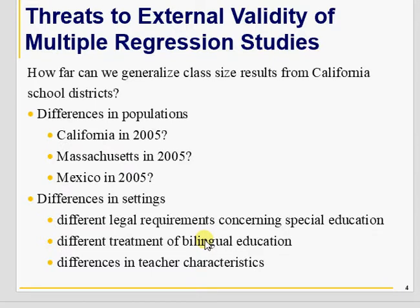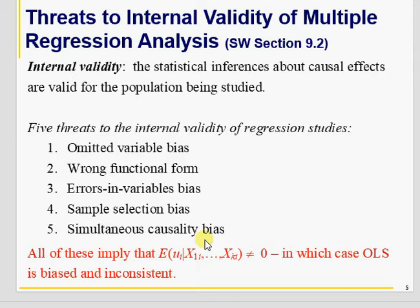With California data, class size reduction leads to improvement in test scores — we did this in the last video with Stata. Whether those results are valid for Massachusetts or for some other country — if they are, then we say there is external validity. If those results are only valid for California, from which the data were taken, that's internal validity. But internal validity also has issues. External validity is an issue because there are different institutional settings, different rules, different factors which play a role. We must be careful whether those results can be applied to some other population as well.